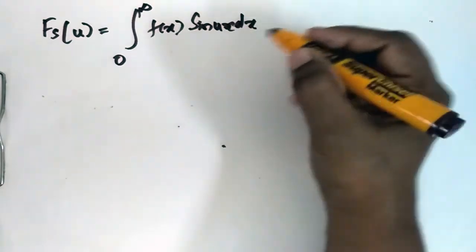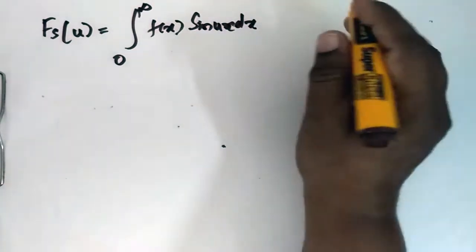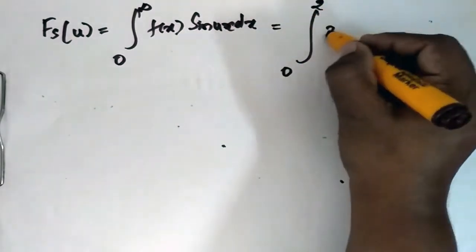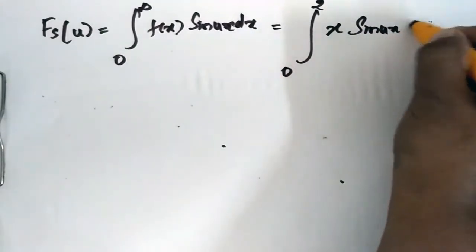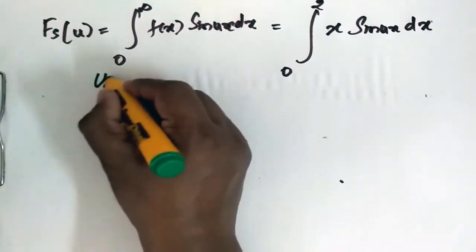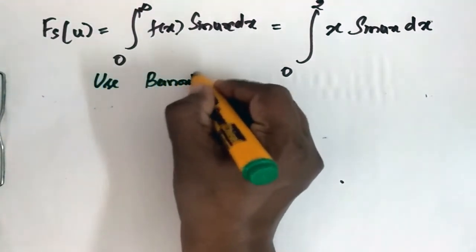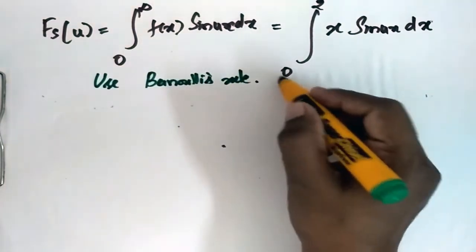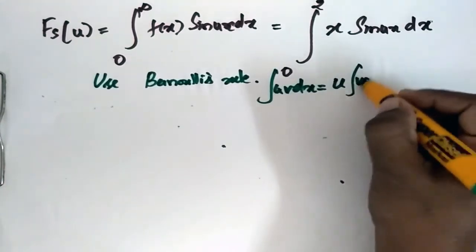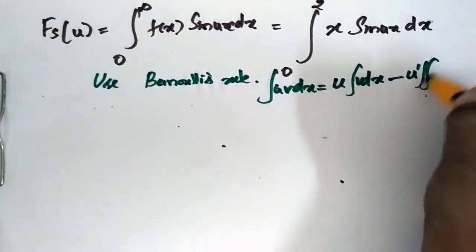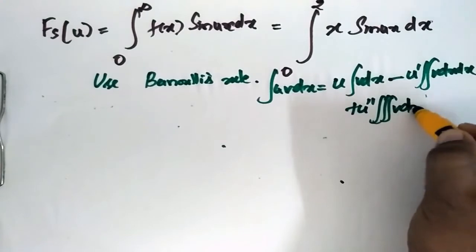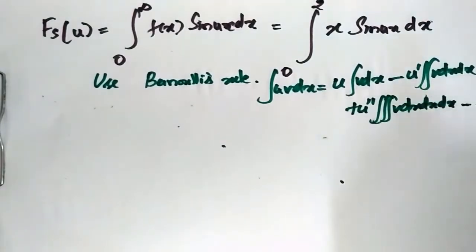The limits of x are from 0 to 2. Using Bernoulli's rule for integration by parts: u integral v dx minus u' double integral v dx dx plus u'' triple integral v dx dx dx, and so on.